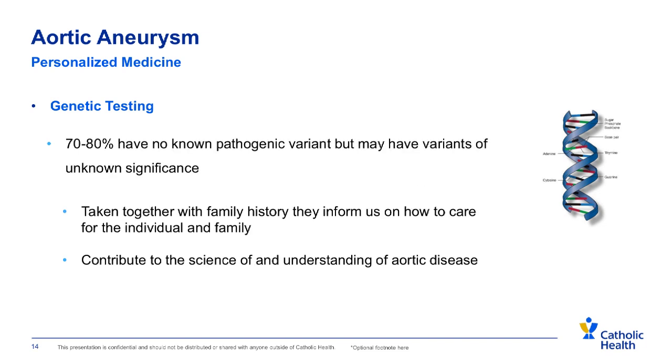About 70 to 80 percent of these patients have what we call variants of unknown significance — single mutations in genes that are not well understood but more commonly occur in patients who have aneurysms and dissections. We've developed a multi-institutional collaboration with several other institutions to engage in research and discuss these variants in order to optimize care for our patients here on the island. Taken together with family history and the patient's medical condition, they help us personalize the trigger to intervene early in a safer fashion.